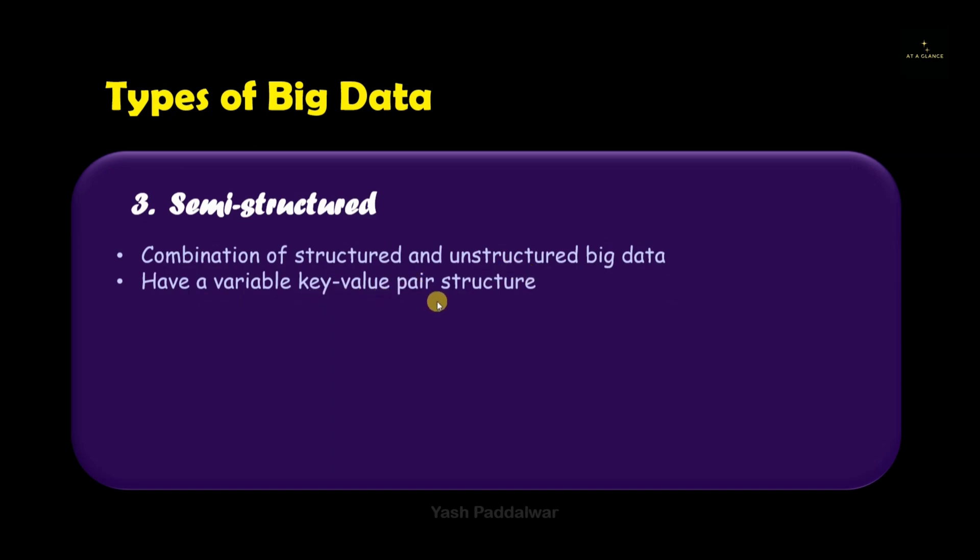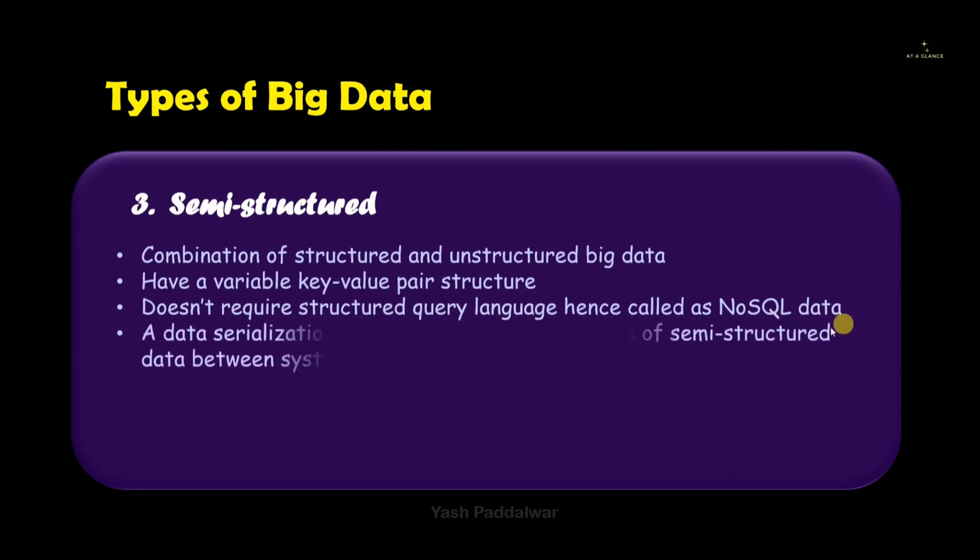So basically if the number of attributes are not fixed but there are a certain amount of attributes that are available from the data source which does not follow a fixed tabular format or a relational database format, this is semi-structured data. Now as you know for the retrieval of structured data we need a structured query language which is SQL. But for the retrieval of semi-structured data we do not need that, and hence this data is called NoSQL data. As this data is not fully structured, it is partially structured, hence it does not require the structured query language.